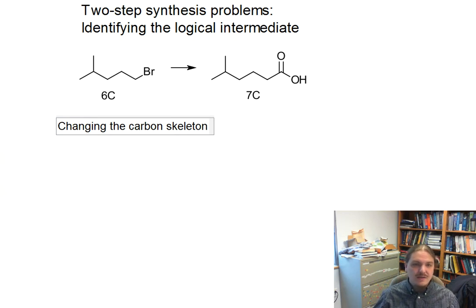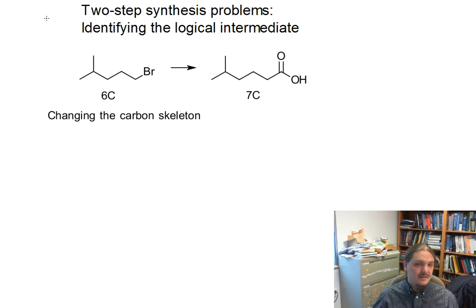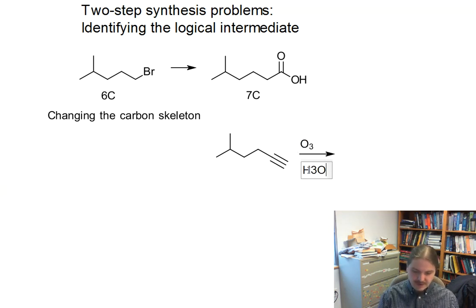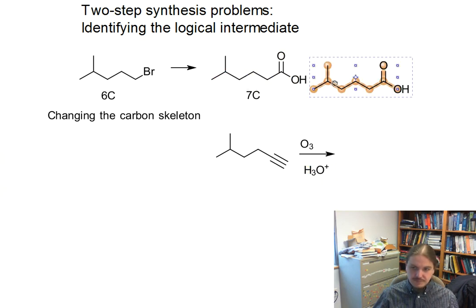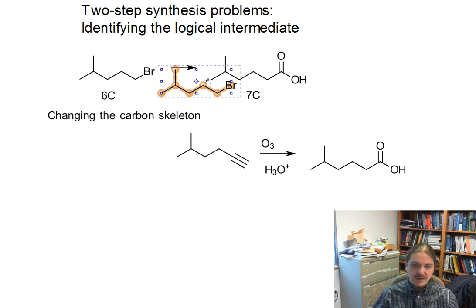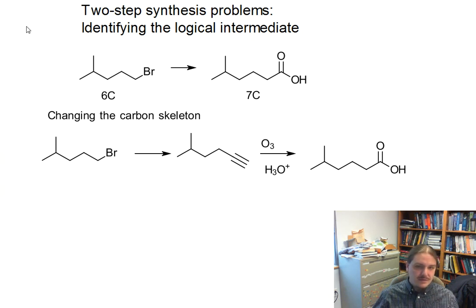Depending on where you are and what reactions you know about, you may recognize multiple ways this could be done. But the logical intermediate I thought of: I look at this carboxylic acid, and at the spot where I am in the course I'm teaching right now, we only know one way to make carboxylic acids — through ozonolysis of alkynes. Now I have this intermediate, and all I need to do is figure out how to convert my alkyl halide into that alkyne. Note: this alkyne has eight carbons, so this reaction needs to add two more carbons — both from the alkyne.